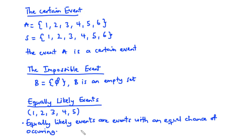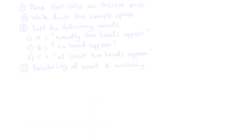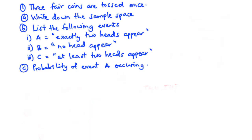Let's consider some examples. For example 1: three fair coins are tossed once. Part A: write down the sample space. Part B: list the following events — set A: exactly 2 heads appear; set B: no head appears; set C: at least 2 heads appear. Part C: find the probability of event A occurring.